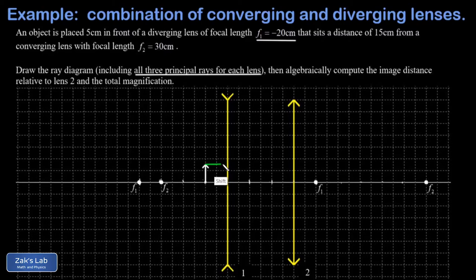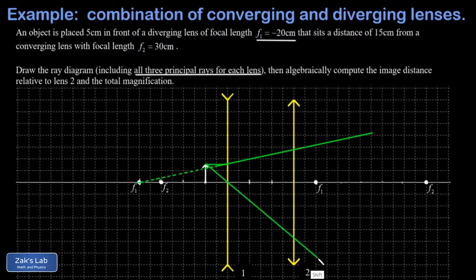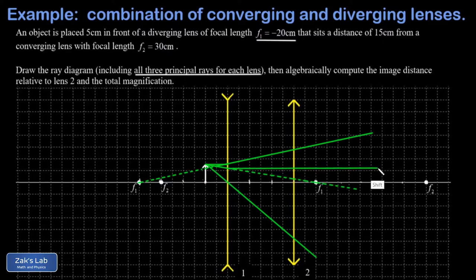Let's get started with the ray diagram. The first thing we do is take a ray parallel to the principal axis off of that object, and that's going to refract away from the principal axis as if it's coming from f1. Next, we take the ray from the head of the object passing through the center of the first lens — that's unrefracted. Finally, we take a ray headed at f1 on the opposite side of the lens, and that one is refracted parallel to the principal axis.